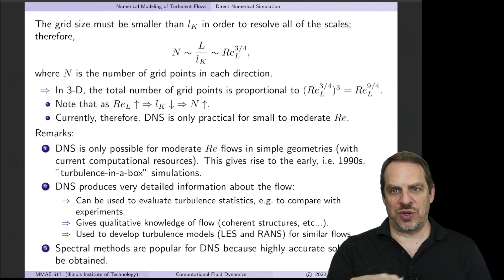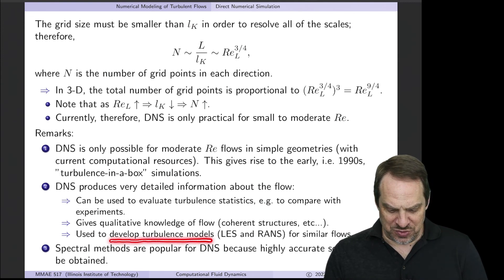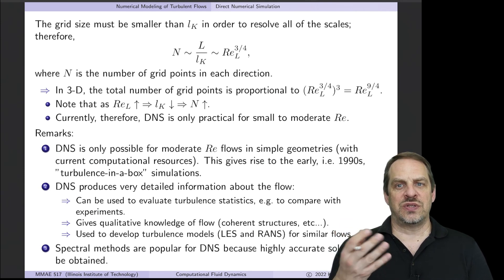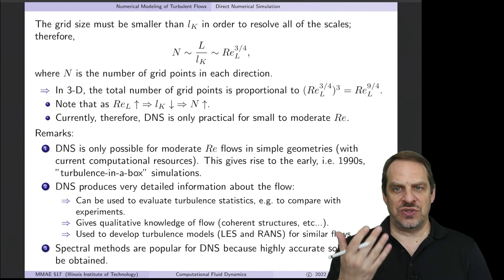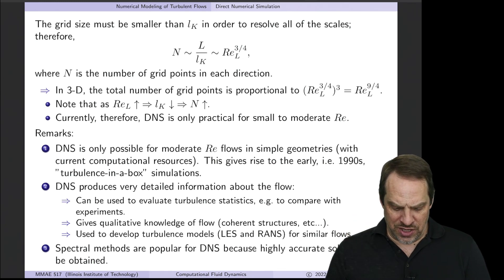It's not getting swept under the rug through some turbulence model. And it can be used, then, to develop turbulence models themselves. So traditionally, we would have used experiments and experimental data to get the turbulence models. We can also use DNS, again, because there's no modeling. So take all that data, and you can turn that into various turbulence models, whether LES or RANS-based models.